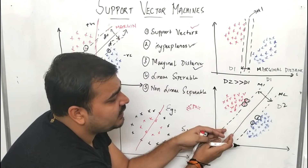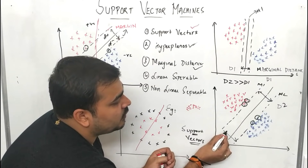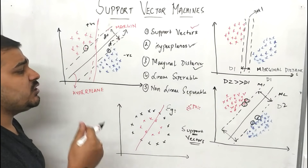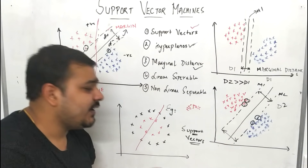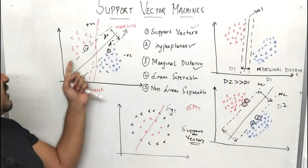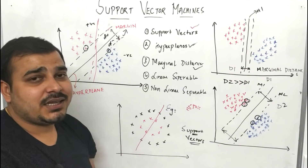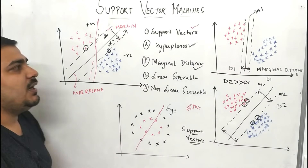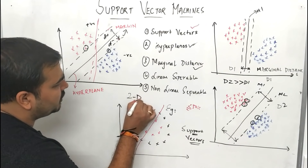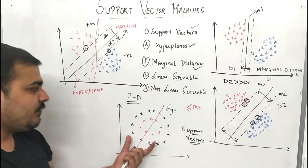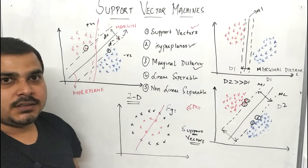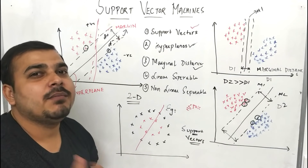These support vectors are pretty important because they help us determine the maximum marginal distance, and remember we ultimately have to create a generalized model. One question still arises: how do we solve non-linear separable problem statements? This hyperplane creation — I'll also discuss the math in upcoming parts — but we need to understand how to solve this. This is a two-dimensional graph with respect to positive and negative points.